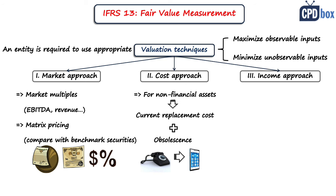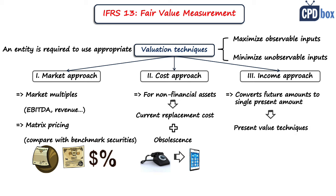The income approach converts future amounts — such as cash flows or income and expenses — to a single current discounted amount. The fair value measurement reflects current market expectations about those future amounts. Examples include present value techniques using estimated future cash flows discounted to present value, option pricing models, and the multi-period excess earnings method.